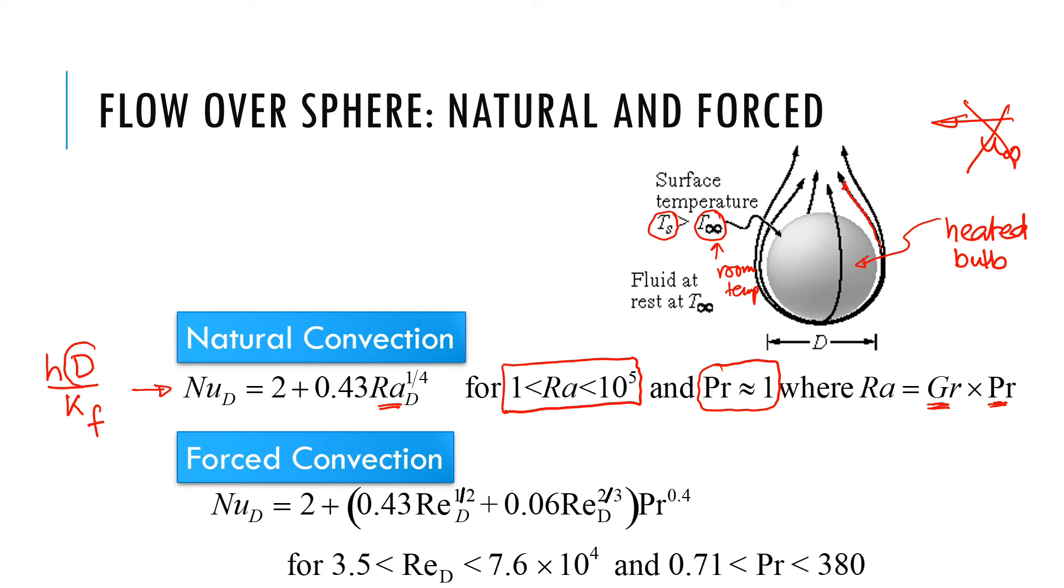For forced convection, which would be something like this—either airflow with some velocity, or it can be airflow from the bottom or from the top, they all mean the same thing. For forced convection, because we have a velocity, we expect to see correlations in terms of Reynolds number, which indeed it is.